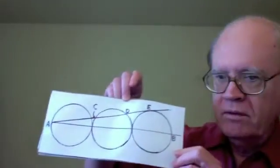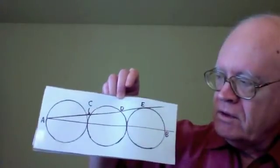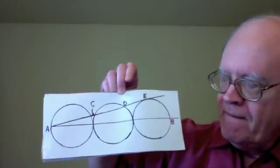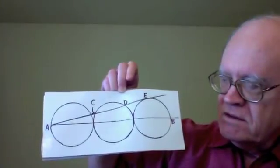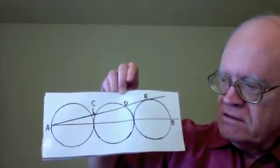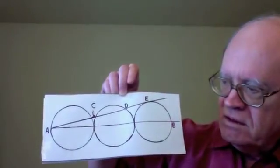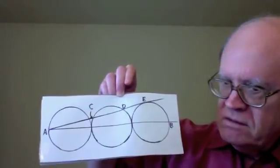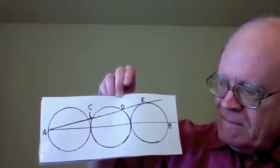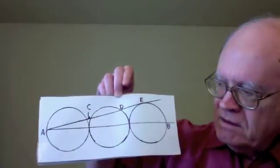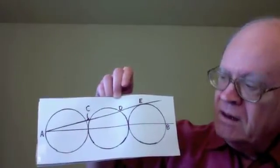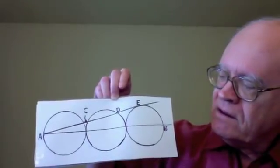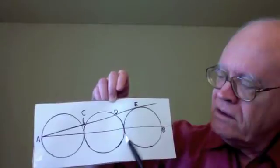We have here three circles. They are equal in size. Each of them has a radius length of one unit. Each of them has its center on line AB. They touch each other from left to right. The leftmost circle is tangent to the middle circle here, and the middle circle is tangent to the rightmost circle here.